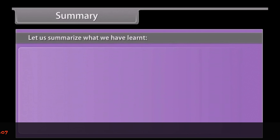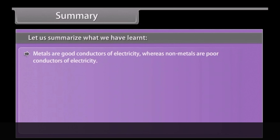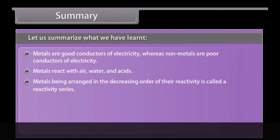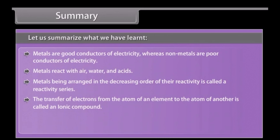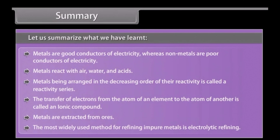Summary: metals are good conductors of electricity, whereas non-metals are poor conductors. Metals react with air, water, and acids. Metals arranged in decreasing order of their reactivity is called a reactivity series. The transfer of electrons from the atom of one element to the atom of another is called an ionic compound. Metals are extracted from ores. The most widely used method for refining impure metals is electrolytic refining.